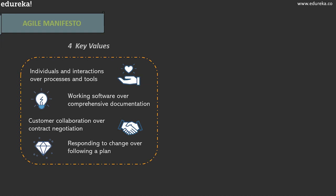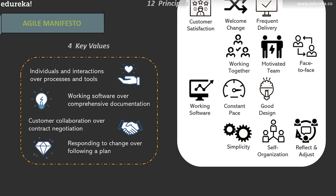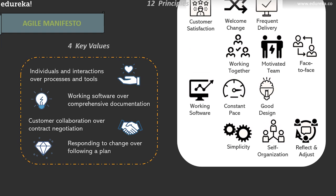The Agile Manifesto laid out four key values: individuals and interactions over process and tools; working software over comprehensive documentation; customer collaboration over contract negotiation; and responding to change over following a plan. The group also laid out 12 principles behind these values, including customer satisfaction, welcoming change, frequent delivery, constant pace, good design, working software after every increment, simplicity, and many more. These four values and 12 principles continue to guide agile methodology even today.